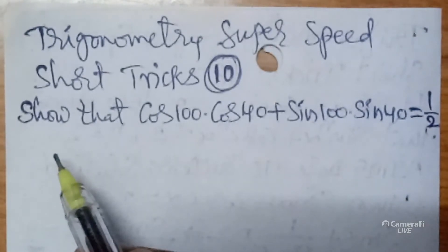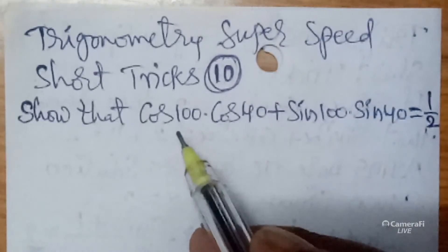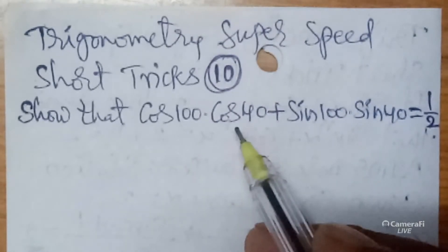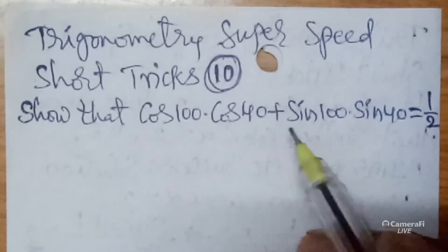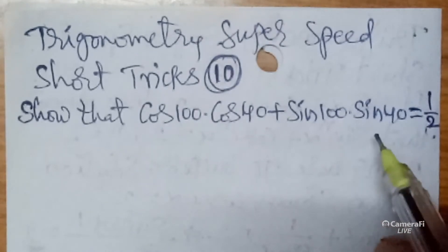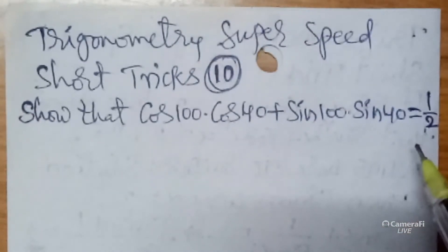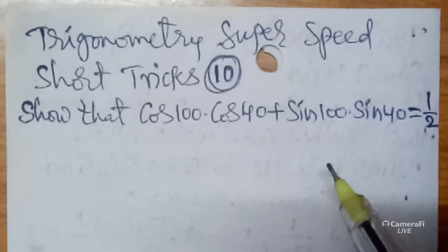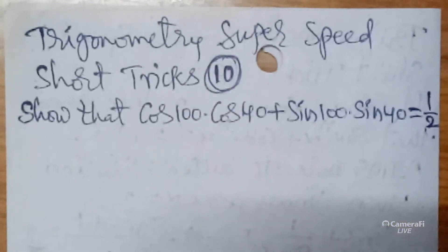So the question is: show that cos 100 into cos 40 plus sin 100 into sin 40 is equals to 1 by 2. Within 5 seconds you will get the answer by using my short trick.